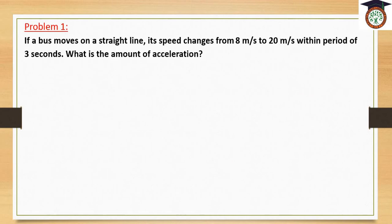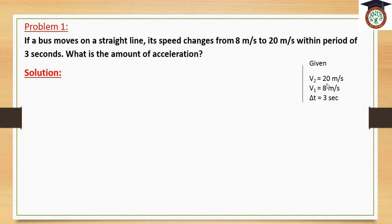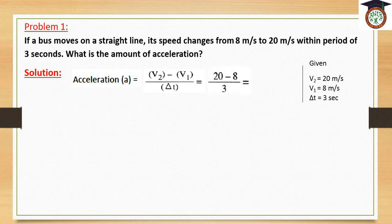We have here a problem: if a bus moves in a straight line and its speed changes from 8 meters per second to 20 meters per second within a period of 3 seconds, what is the value of acceleration? Solution: given V1 (initial velocity) = 8 m/s, V2 (final velocity) = 20 m/s, and time = 3 seconds. Using the relation: acceleration = (V2 - V1) / T = (20 - 8) / 3. So acceleration equals 4 meters per second squared.